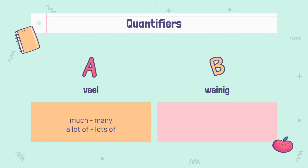So: 'veel' means in English much, many, a lot of, or lots of. 'Weinig' means little or few. Pay attention: 'little' means 'weinig,' 'few' also means 'weinig.' And much, many, a lot of, lots of all mean 'veel.'